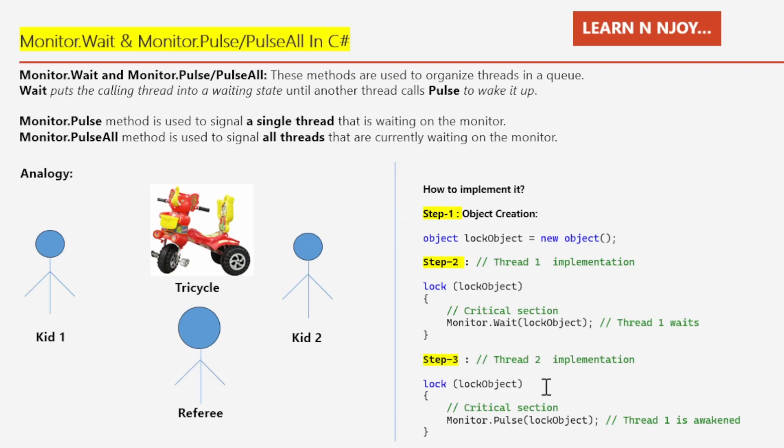Step three: we write lock(lockObject) again, ensuring only one thread at a time enters the critical section. Inside the lock block, we write Monitor.Pulse(lockObject) to send a signal to the single waiting thread that is blocked in the Monitor.Wait call in Thread One. Once Thread Two executes this line, it signals Thread One that it can proceed.